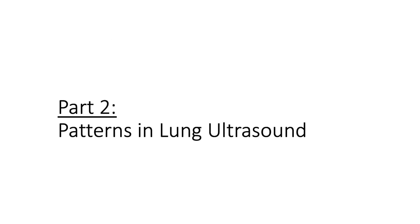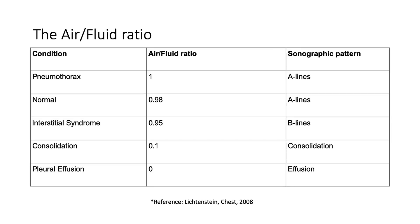Part two covers patterns on lung ultrasound. A key concept is the idea of the air-fluid ratio. If there's more air in the chest, for example due to pneumothorax or normal lung, we will typically see A lines. A little bit more fluid and we begin to form a B line appearance, which is due to an interstitial thickening process. Lower air-fluid ratios will give us a consolidation.